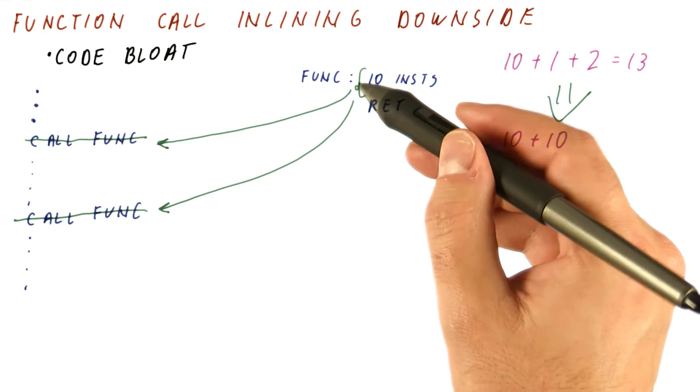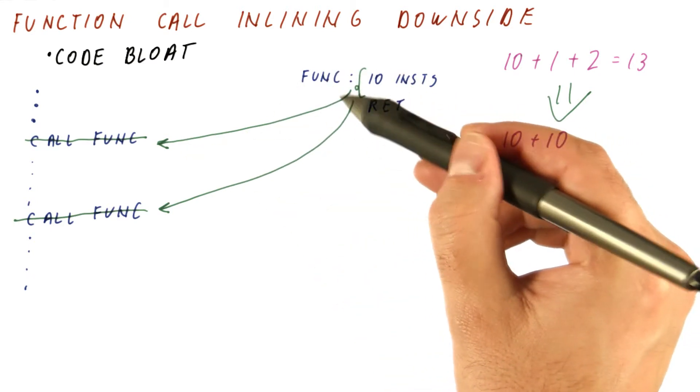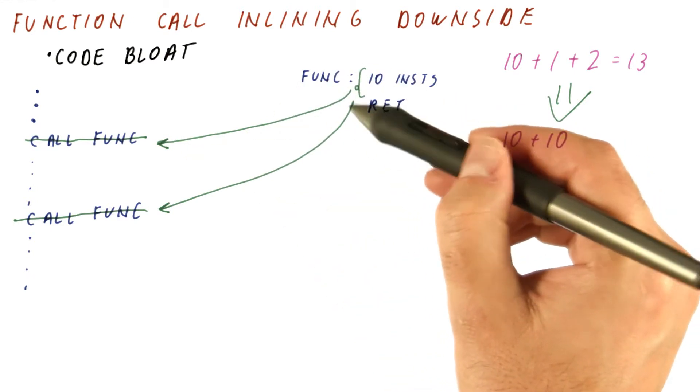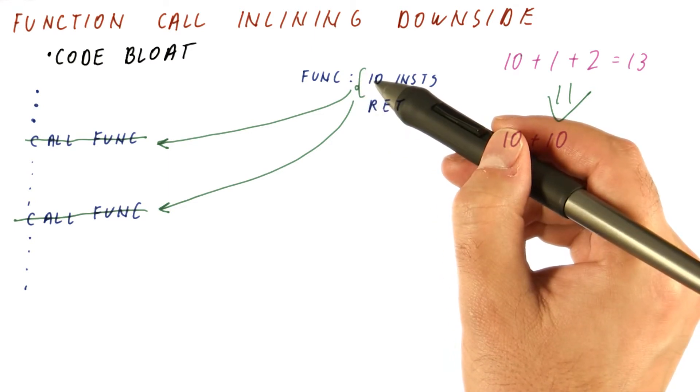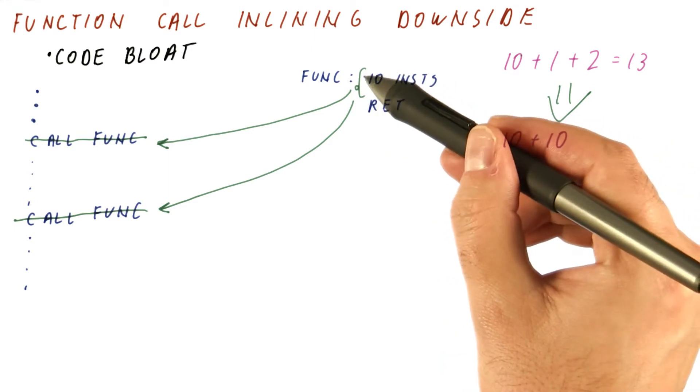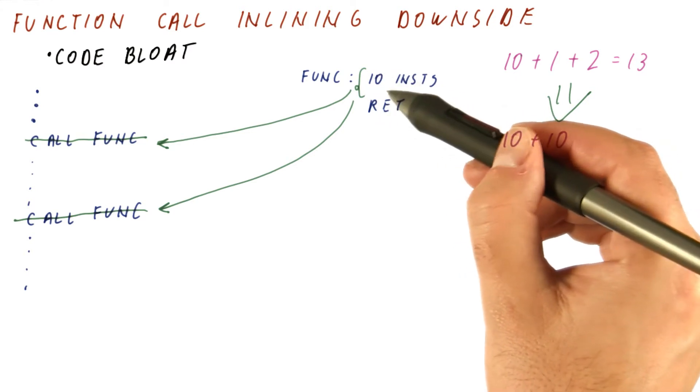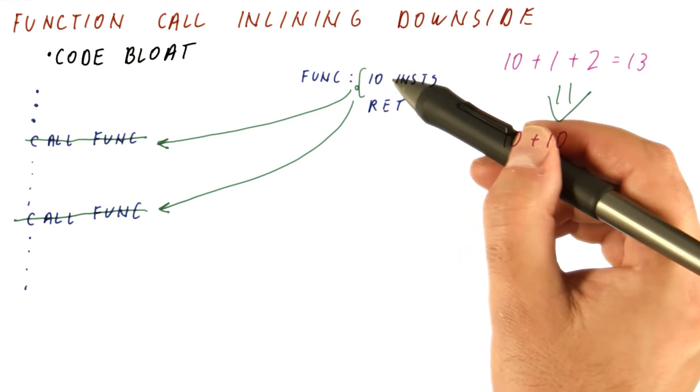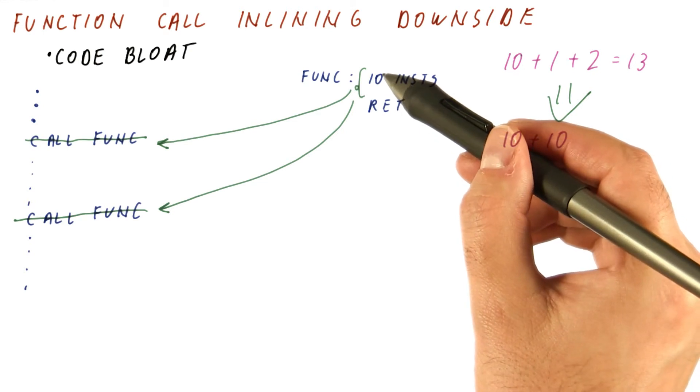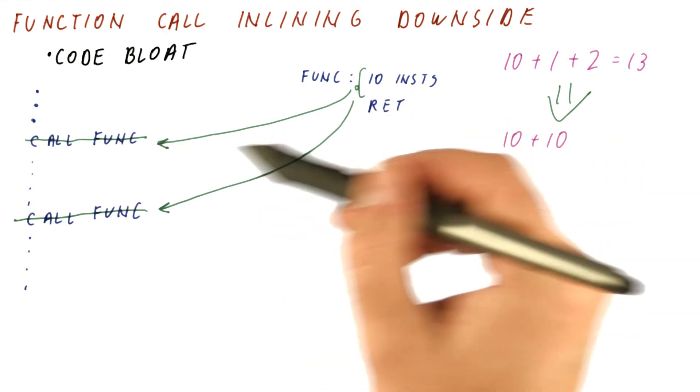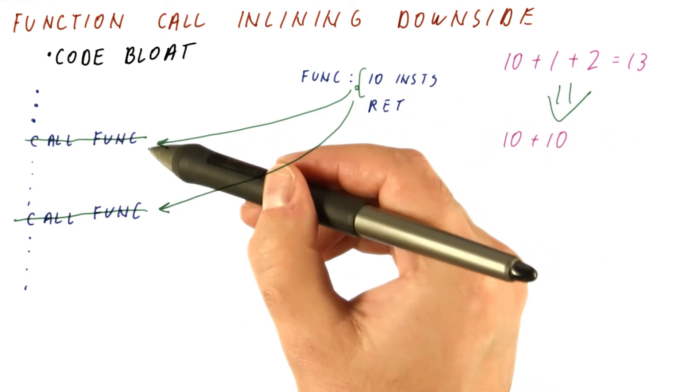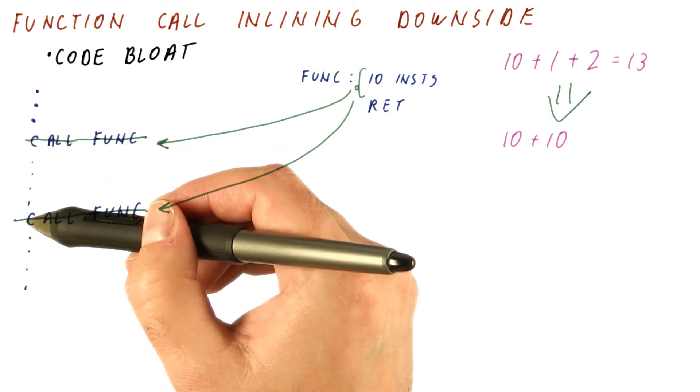This means that we really need to be judicious about when we do function call inlining. We cannot inline all of the functions that we want. We want to inline functions that are small, because the fewer instructions we have here, the more we are likely to offset the additional instructions we put in here by the removal of some of the overheads.